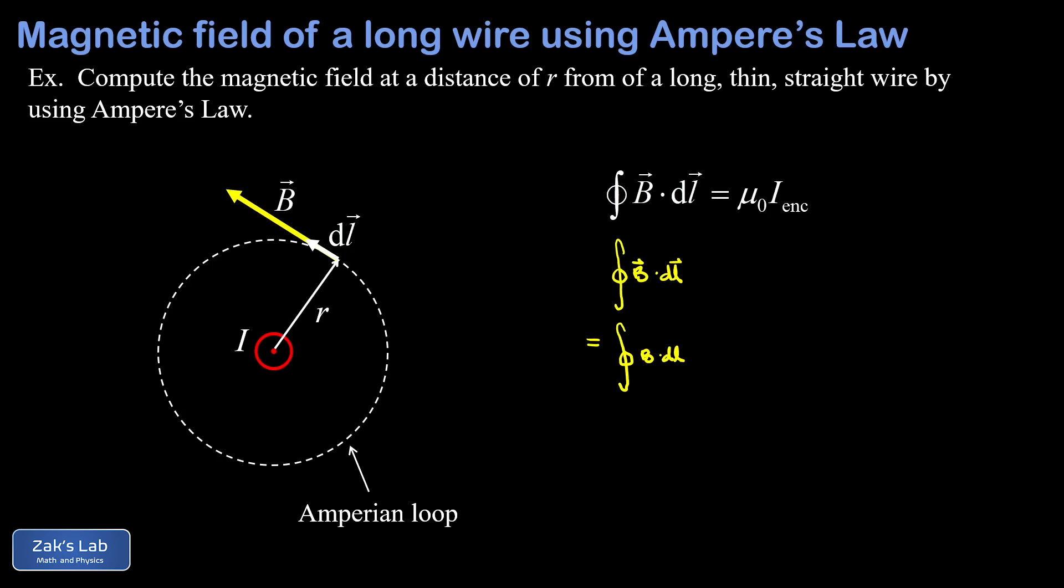In other words, the magnitude of B depends only on its distance from the wire. With an Amperian loop centered on that wire, the magnitude of B is constant. The next move is to factor that constant B out in front of the integral.